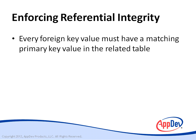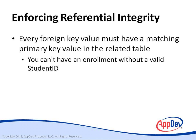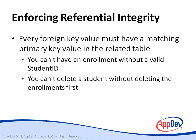Enforced relationships require that every foreign key value have a matching primary key value in the related table. In other words, the enrollment table can't contain a student ID that doesn't correspond to a matching student ID in the student table. Enforcing referential integrity also means a student record can't be deleted while any enrollment records exist that depend on that student. Additionally, you can't change a student ID value without making the same change to the student ID values in related enrollment records.